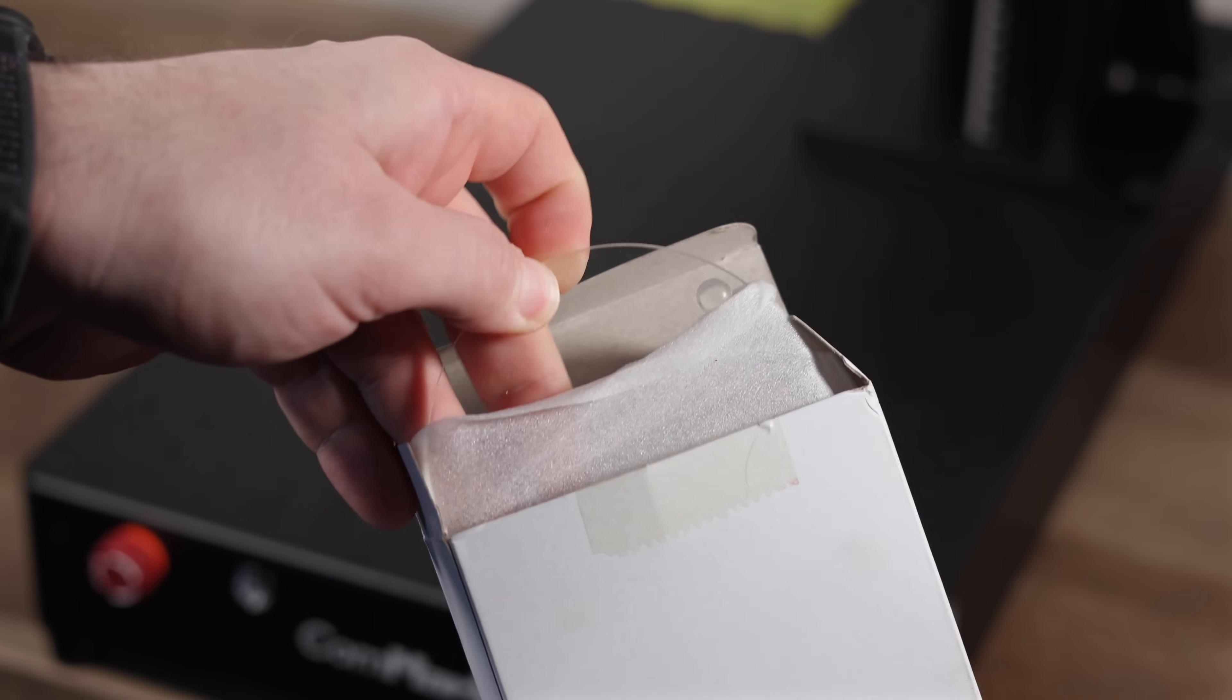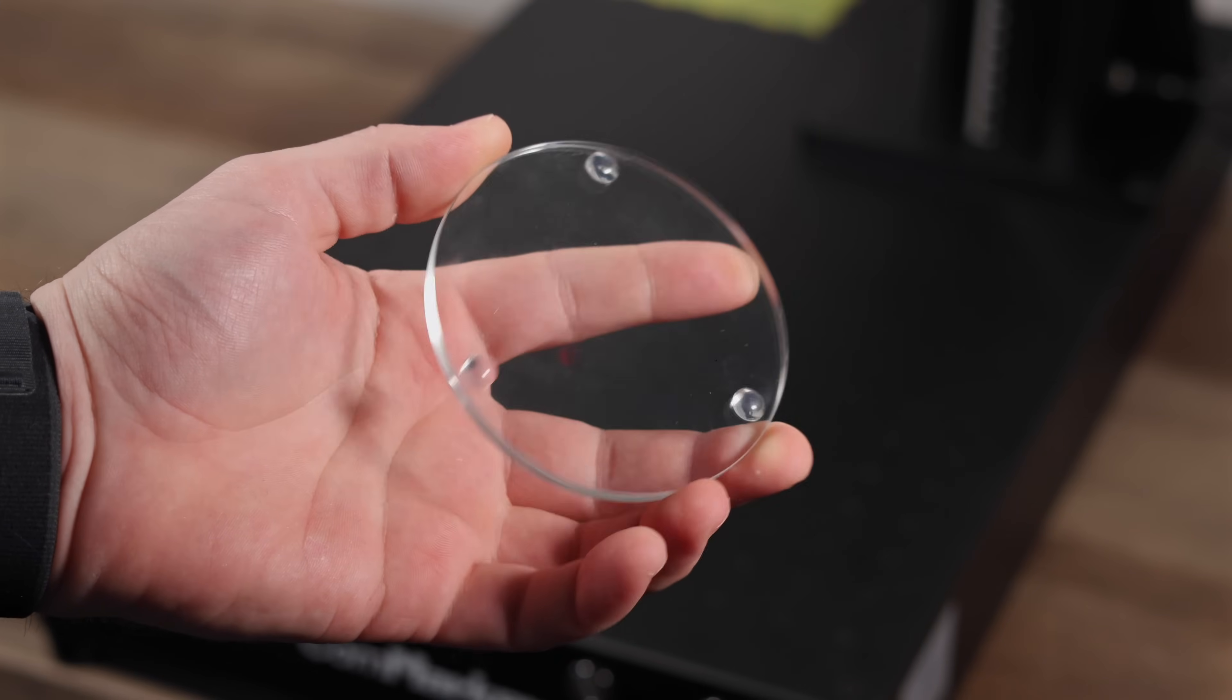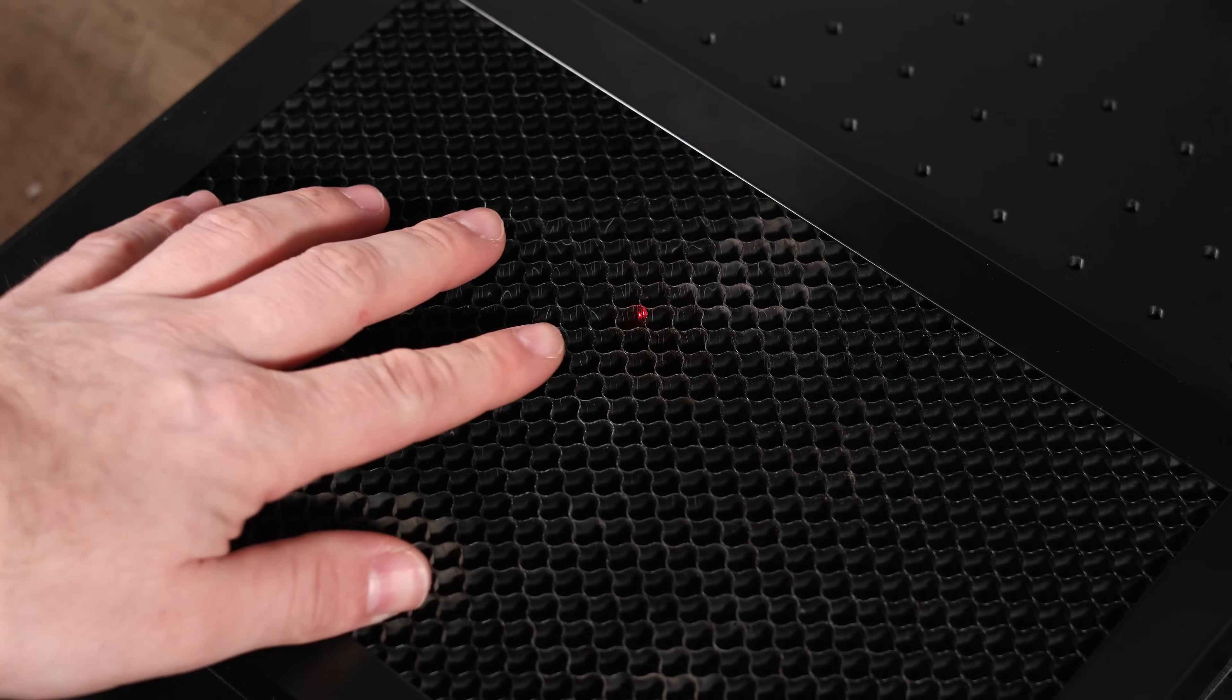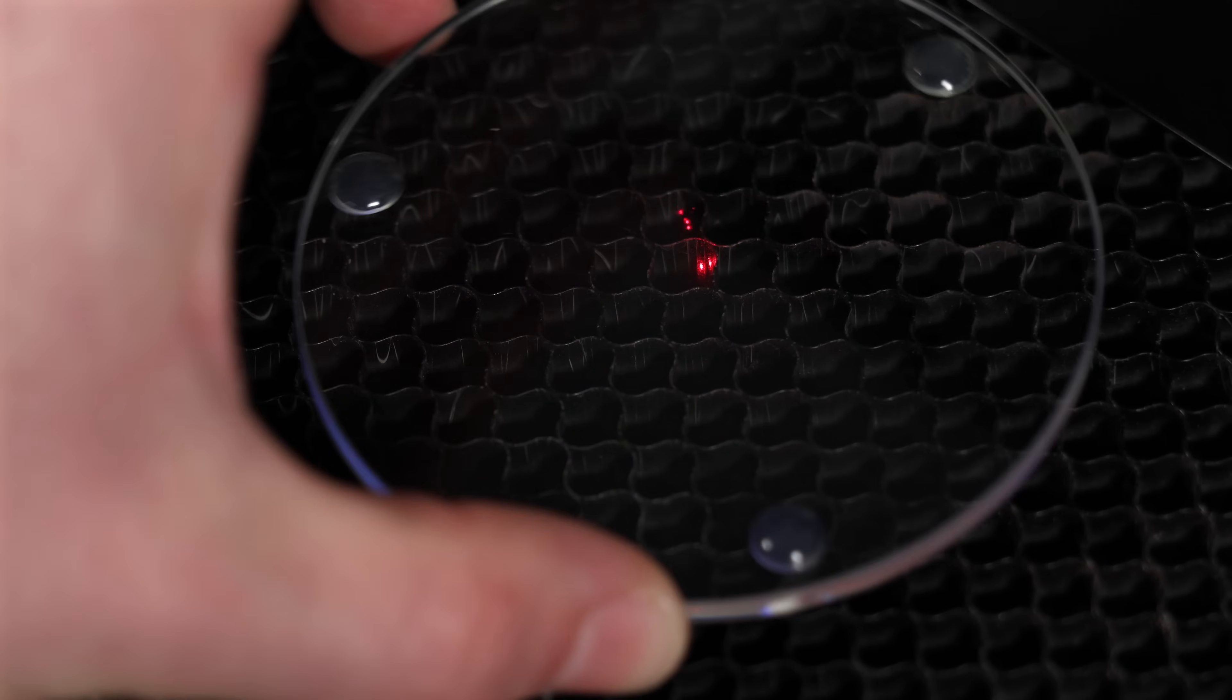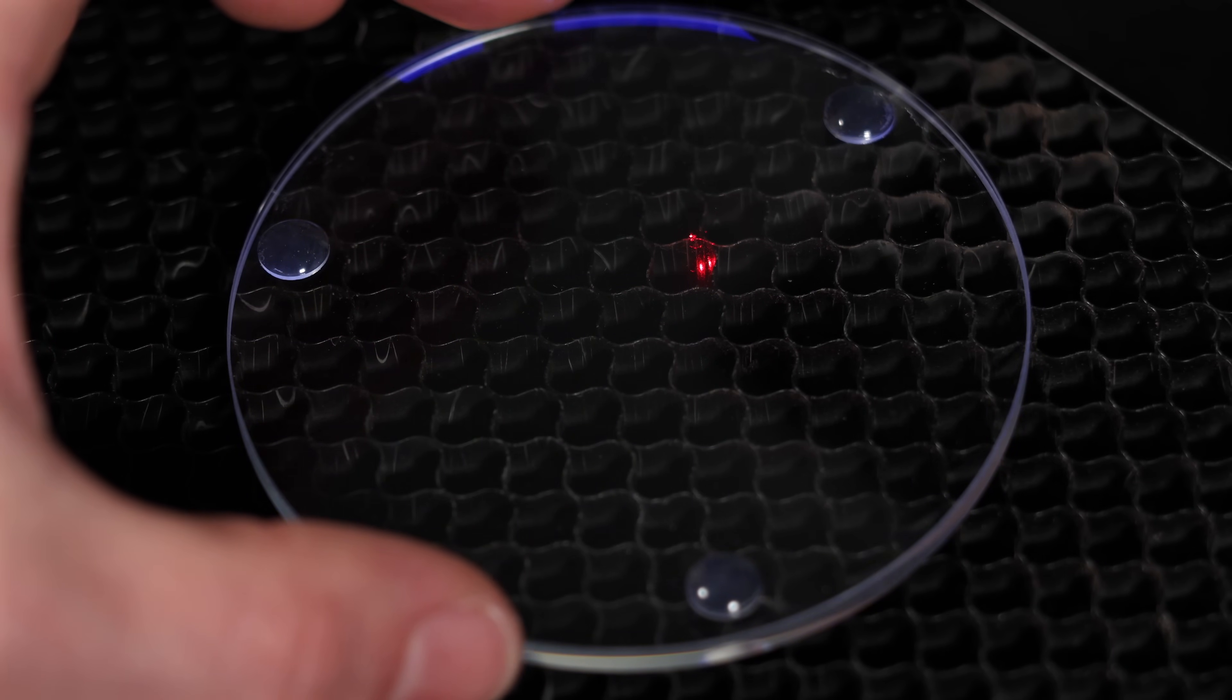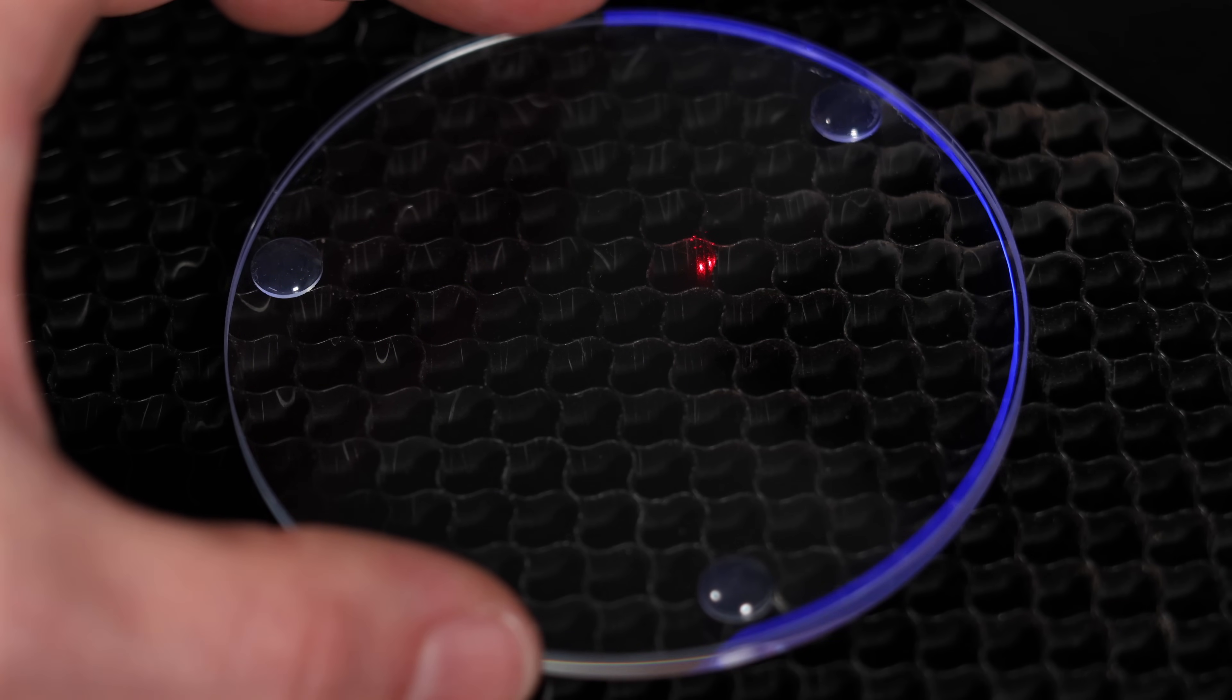For our first project, we just had to try engraving glass. If you're new to the channel, we primarily review blue light and IR fiber lasers, both of which have their limitations when it comes to glass. With those lasers, you usually need to apply a layer of paint or coating to help the laser stay on the surface, as the light tends to pass right through. UV lasers, on the other hand, are perfect for glass.